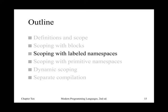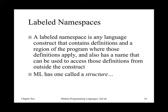This is the concept. The definition of labeled namespace — this is our official definition — is any language construct, irrespective of the language (it's going to be called different things), that contains definitions and a region of the program where those definitions apply. It's kind of like a scope thing, but in particular, this is a situation in which there's a name that we can use to access those definitions outside the construct.